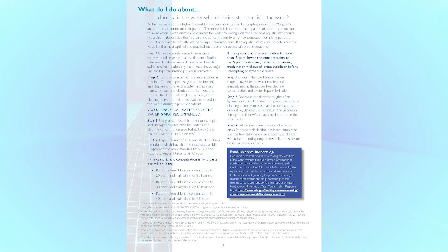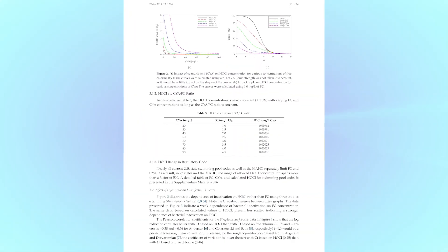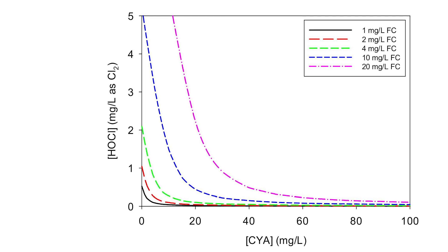CYA has a major impact on chlorine efficiency. Fortunately, even low levels of active chlorine can disinfect and prevent algae. If there is an accidental fecal release in a commercial or public pool, the CDC's recommendation is a maximum of 15 parts per million CYA. And as covered in course 3, achieving disinfection of diseases like cryptosporidium and giardia requires a certain amount of contact time with chlorine. With CYA over 15 parts per million, disinfection becomes impractical because the contact time goes way up.